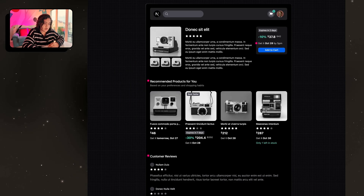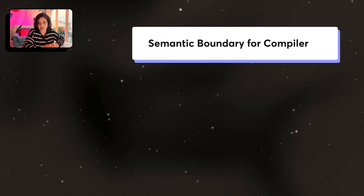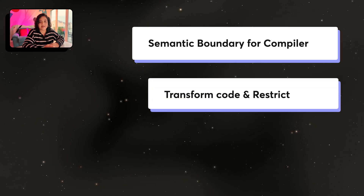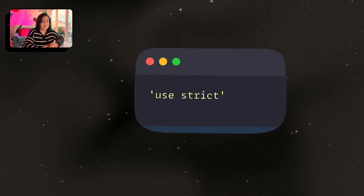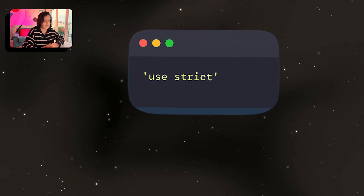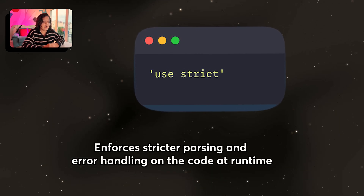Here's what the directive pattern truly unlocks: directives become semantic boundaries for the compiler. When the compiler sees a directive, it's allowed to treat that function differently — it can transform the code, restrict certain APIs, and enable compiler-level optimizations that just aren't possible with a simple import. Think of 'use strict' from back in the day — a tiny string that changed how the engine behaves. With 'use cache', it's the same idea. You're telling Next.js that this component is deterministic, it's safe to memoize, and its rendered output can be reused across requests. Whenever a decision is being made, there's always a reason for it.